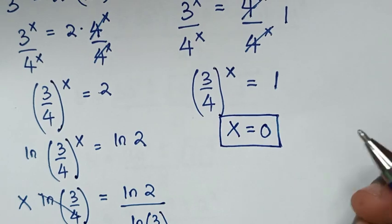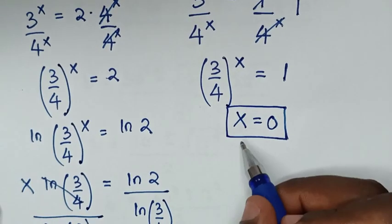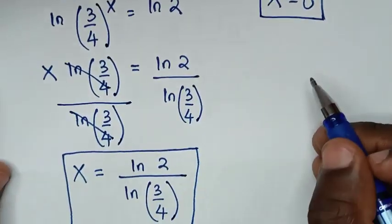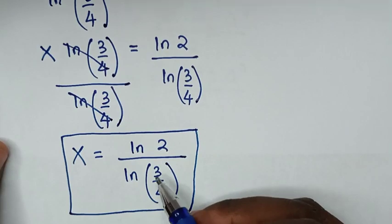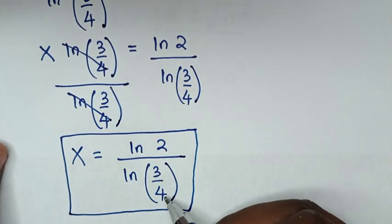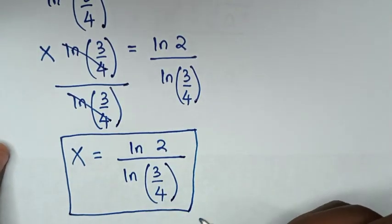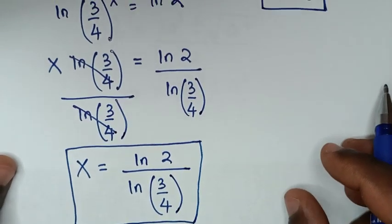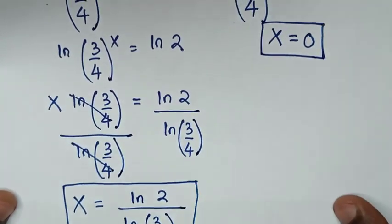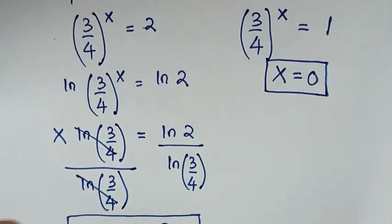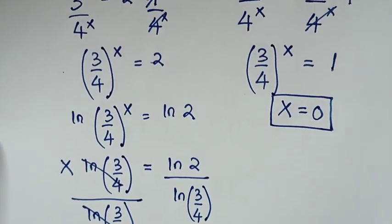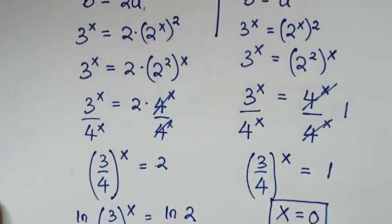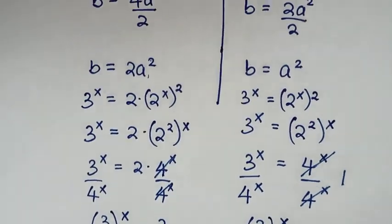So the values of x are: x = 0 and x = ln 2 over ln(3/4). Thank you. Don't forget to like and subscribe to my channel, and see you in the next video. Bye-bye.